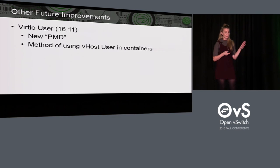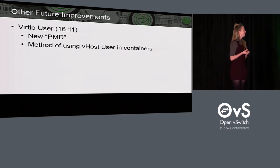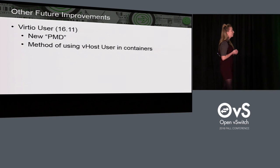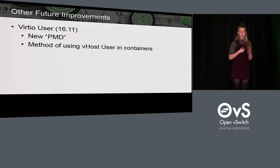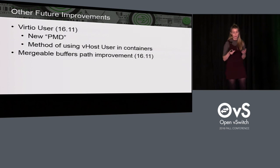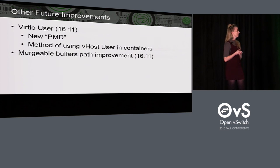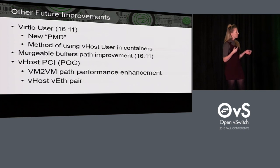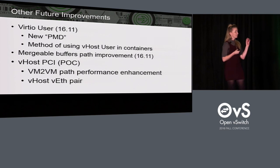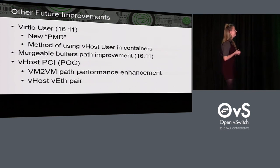Quickly touching on some other potential future improvements: virtio user is a new poll mode driver type in DPDK 16.11 — basically a method of using vhost user in containers. For this to work with OVS, I don't think we need any code changes, so it's something I'm hoping to try out soon. Also in 16.11, there are general optimizations to the mergeable buffers path, which we should get for free in OVS when we integrate 16.11. Finally, there's a proof of concept called vhost PCI — a VM-to-VM path performance enhancement where you essentially bypass the host and copy packets directly from one VM to another.